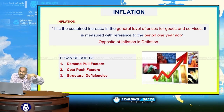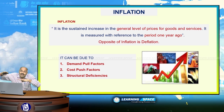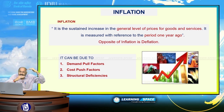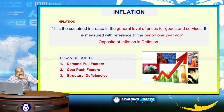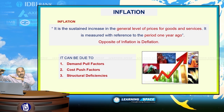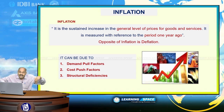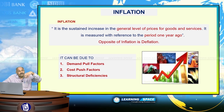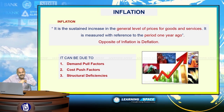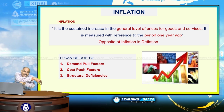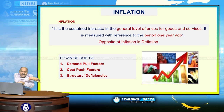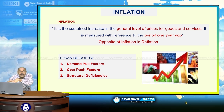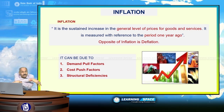Inflation is the sustained increase in the general level of prices of goods and services. Sustained increase means it is not fluctuating — not 100 today, 80 tomorrow, 120 the day after. Inflation is normally measured with reference to prices a year ago. If inflation in January 2016 is 6%, it indicates that prices of goods and services in January 2016 are 6% higher compared to January 2015.